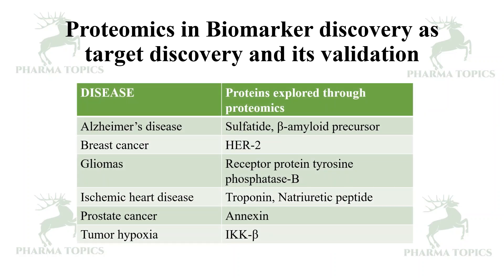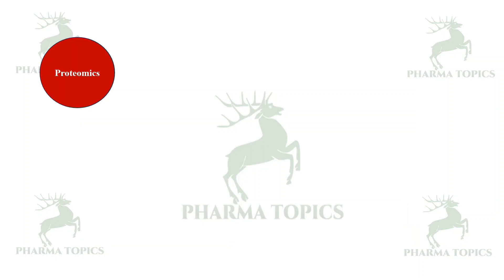Proteomics is very useful in biomarker discovery, target discovery, and validation. Looking at specific diseases: proteomics has revealed that reduced sulfatide and beta-amyloid precursor protein are linked to Alzheimer's disease. HER2 proteins are involved in breast cancer. Receptor protein tyrosine phosphatase beta is involved in gliomas (brain cancer). Troponin and natriuretic peptides are involved in ischemic heart disease. Annexin is a protein involved in prostate cancer, and IKK-beta is involved in tumor hypoxia — all revealed through the bioinformatic approach of proteomics.